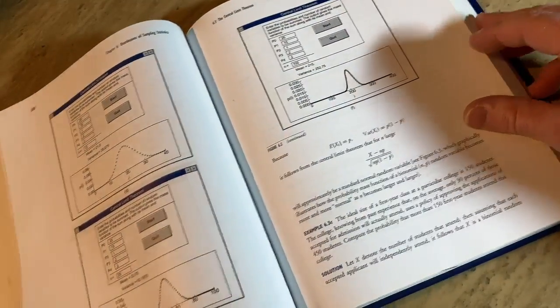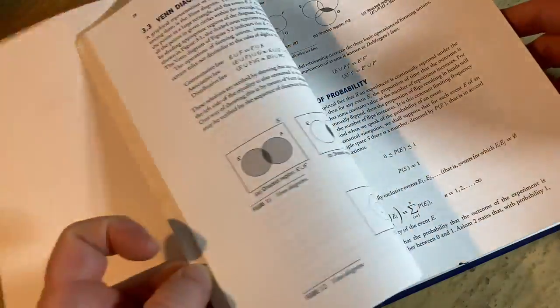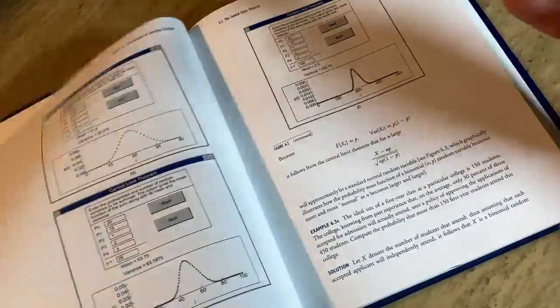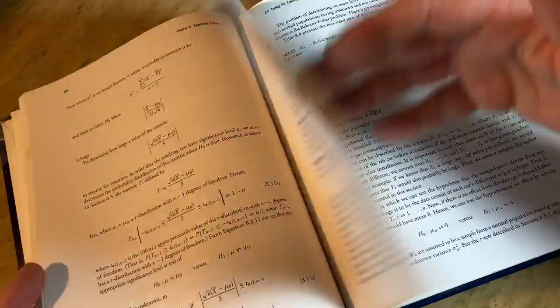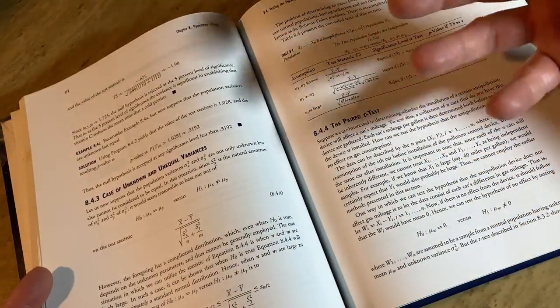So the bad part about this book is that there are no solutions to any of the exercises. None. I don't see any in the book. There are tons of exercises, tons, and there's really good examples.